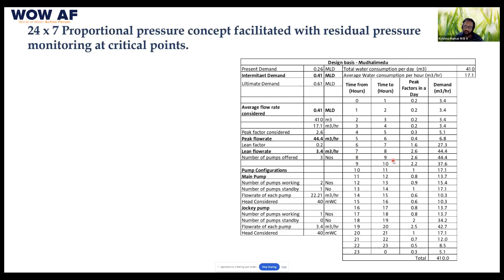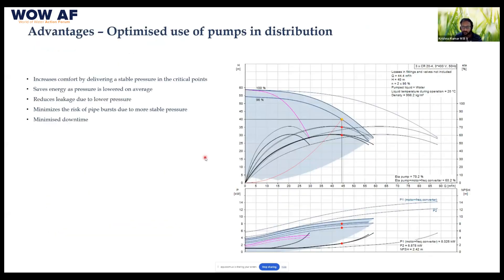The peak flow rate is 44.4 cubic meters per hour and the lean flow rate is 3.4 cubic meters per hour. There is a large difference between peak and lean flow. In many cases, what we do is split 44.4 cubic meters per hour across 3 or 4 pumps — I'll show the pump performance curve shortly.